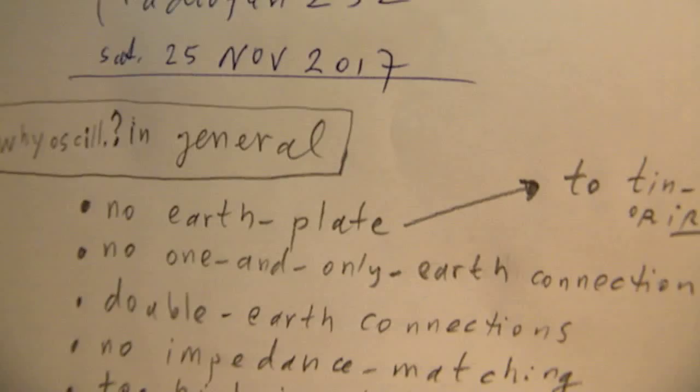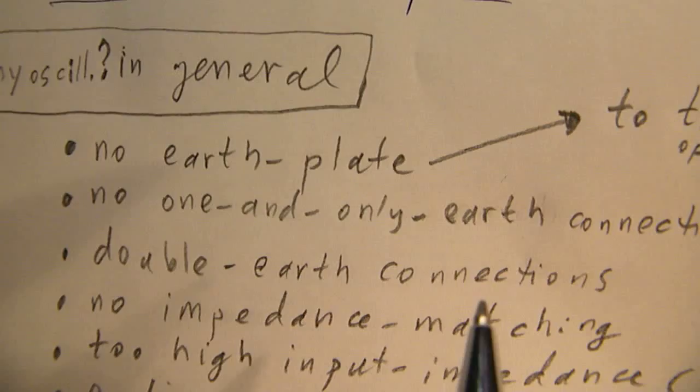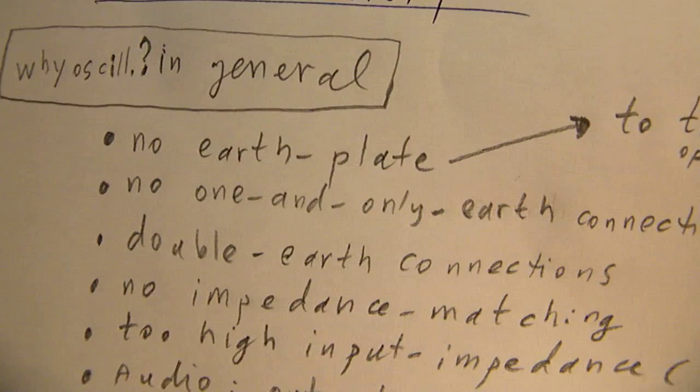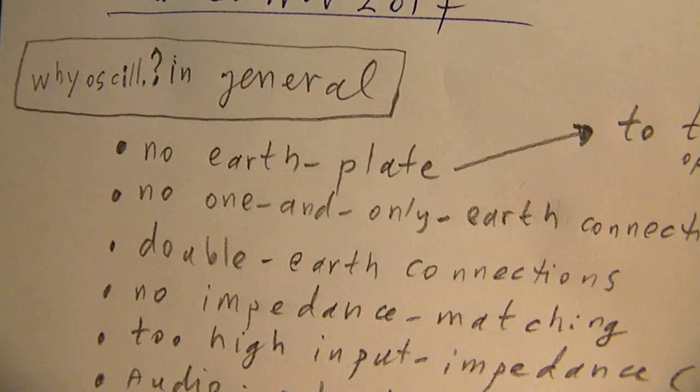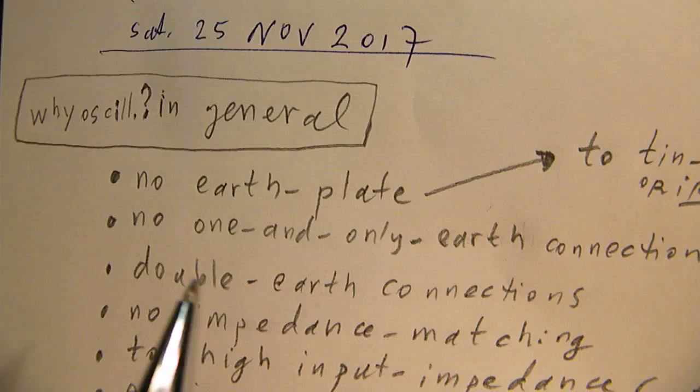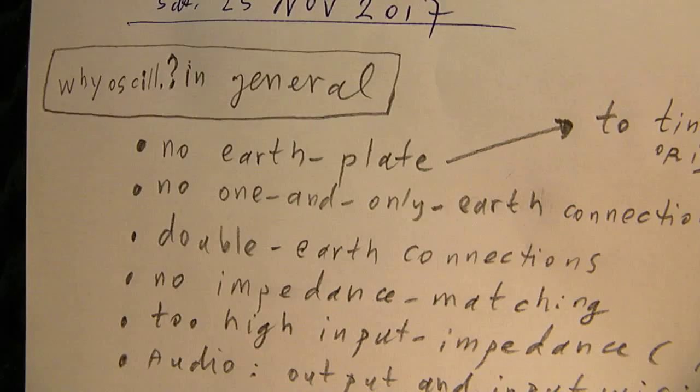When that's not the case, it could be that you have a double earth connection. And such a double earth connection can mean oscillations, can mean hum, a persisting hum that's generated by a tiny earth current that starts to flow from one potential to another potential when not all the earth connections are on zero level.